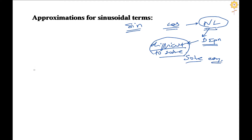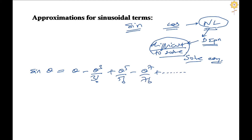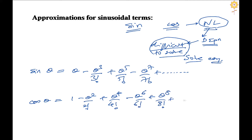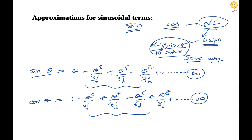Referring to the Taylor series expansion: sin(theta) = theta minus theta^3/3! plus theta^5/5! minus theta^7/7! and so on. The expansion for cos(theta) is 1 minus theta^2/2! plus theta^4/4! minus theta^6/6! and so on. If the number of terms goes to infinity, the series converges exactly to sin(theta) and cos(theta) respectively — and these are non-linear.